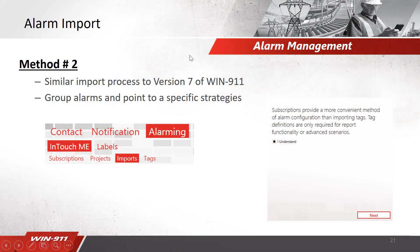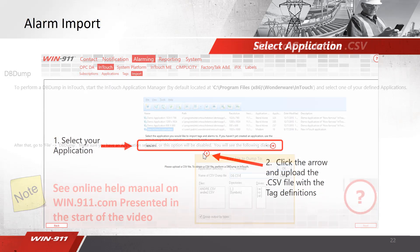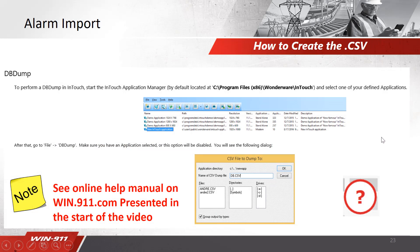Now I'll be discussing the second method for bringing your alarms over: alarm import. For alarm import, you'll be in Alarming InTouch ME and click on the Imports tab. A pop-up will appear with a message and you click Next. Alarm import is similar to version 7 — you group your alarms and point them to a specific strategy. A screen will pop up where you select your application — ours is called WIN911. You can click the little plus button to upload your CSV file. If you don't have the CSV file, the next slide shows how to create it, and there's more information on our website and in the documentation.